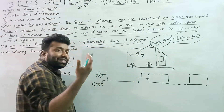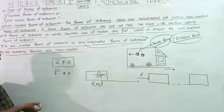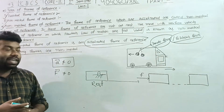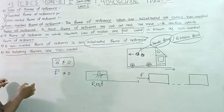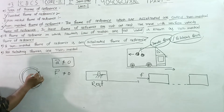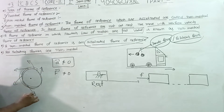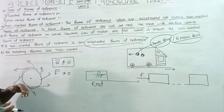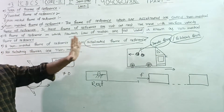All rotating frames are non-inertial. The rotating frame of reference is non-inertial. When you are in a rotating frame, such as on a merry-go-round, you experience a fictitious force — also called centrifugal or pseudo force — directed outward.